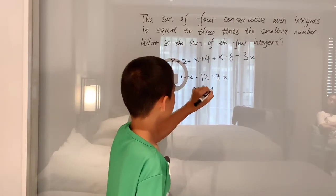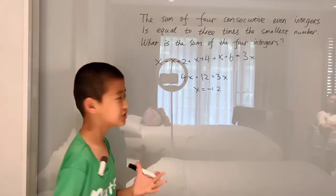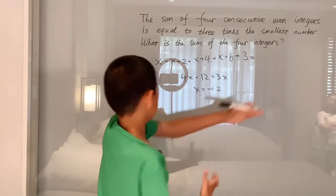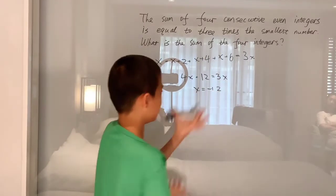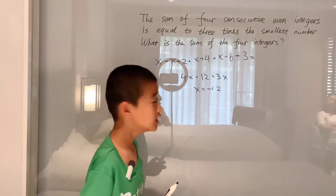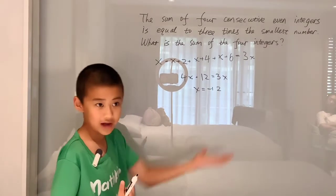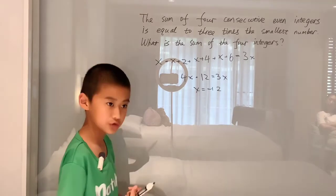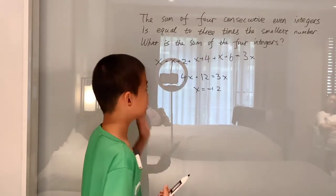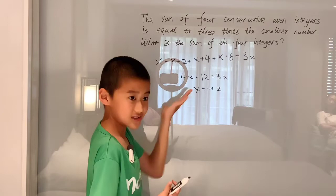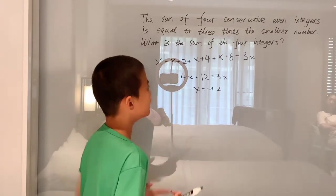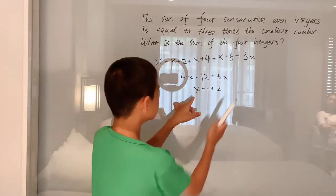Now the last step in a word problem is to look at the question. Don't just automatically think, 'Cool, X is negative 12.' Usually in algebra that works, since you found the variable and that's usually the answer. But here in word problems, X is not what they want. They want the sum of our four integers, so you have to plug X in to one of these.